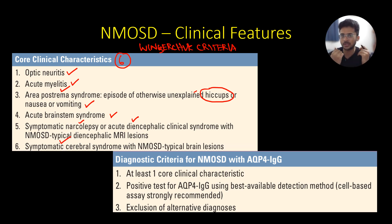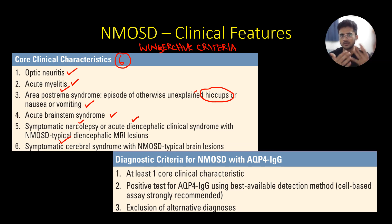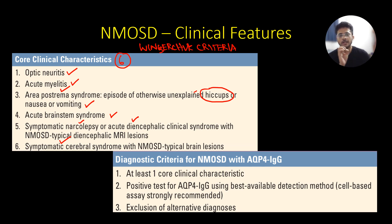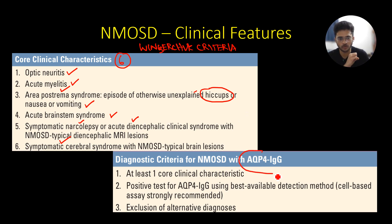Initially it was thought that NMOSD predominantly affects the optic nerves and spinal cord and usually does not cause brain lesions, but that is not the case. There can be involvement of the dorsal medulla, the diencephalon, and even symptomatic cerebral lesions. For patients who have a positive aquaporin-4 antibody, just the presence of one core clinical characteristic is enough to diagnose NMOSD.